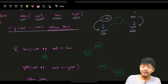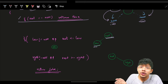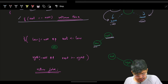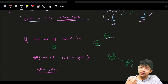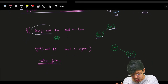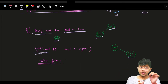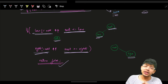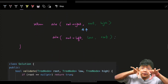The BST is invalid when the low value is more than or equal to the root value (because for validity, low should be less than root), or when the high value is less than or equal to the root. So: if low is not null and root value is less than or equal to low, return false. Or if high is not null and root value is more than or equal to high, return false.